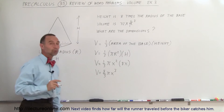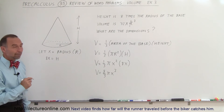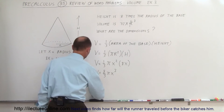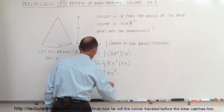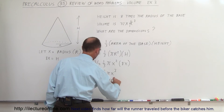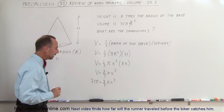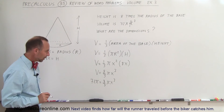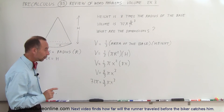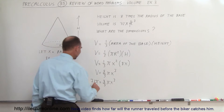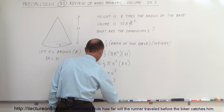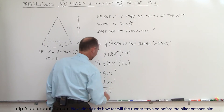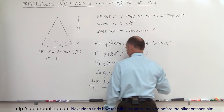We were told that the volume is equal to 72 pi cubic feet, so we can write that 72 pi equals eight-thirds pi X cubed. We can divide both sides by pi and by 8 to make things simpler — divide the left side by 8 pi and the right side by 8 pi.